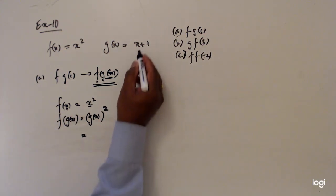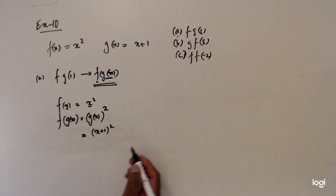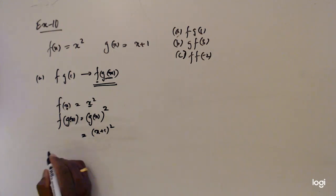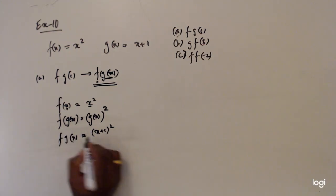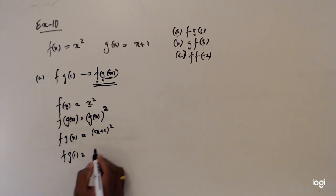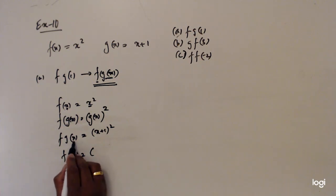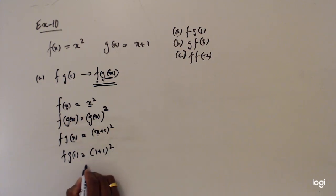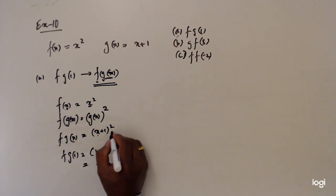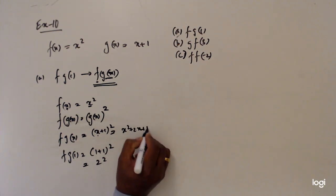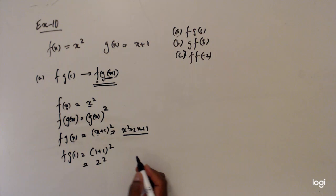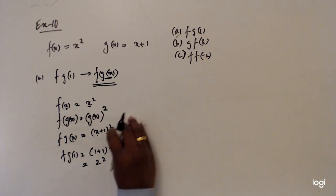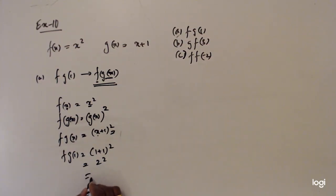Now, what is g(x)? g(x) is x plus 1, so fg(x) equals (x+1) squared. Now we have fg(x). Then we need fg(1), so we simply put x equal to 1: (1+1) squared, which is 2 squared. Don't try to expand this as x squared plus 2x plus 1, because it's a waste of time in this case.